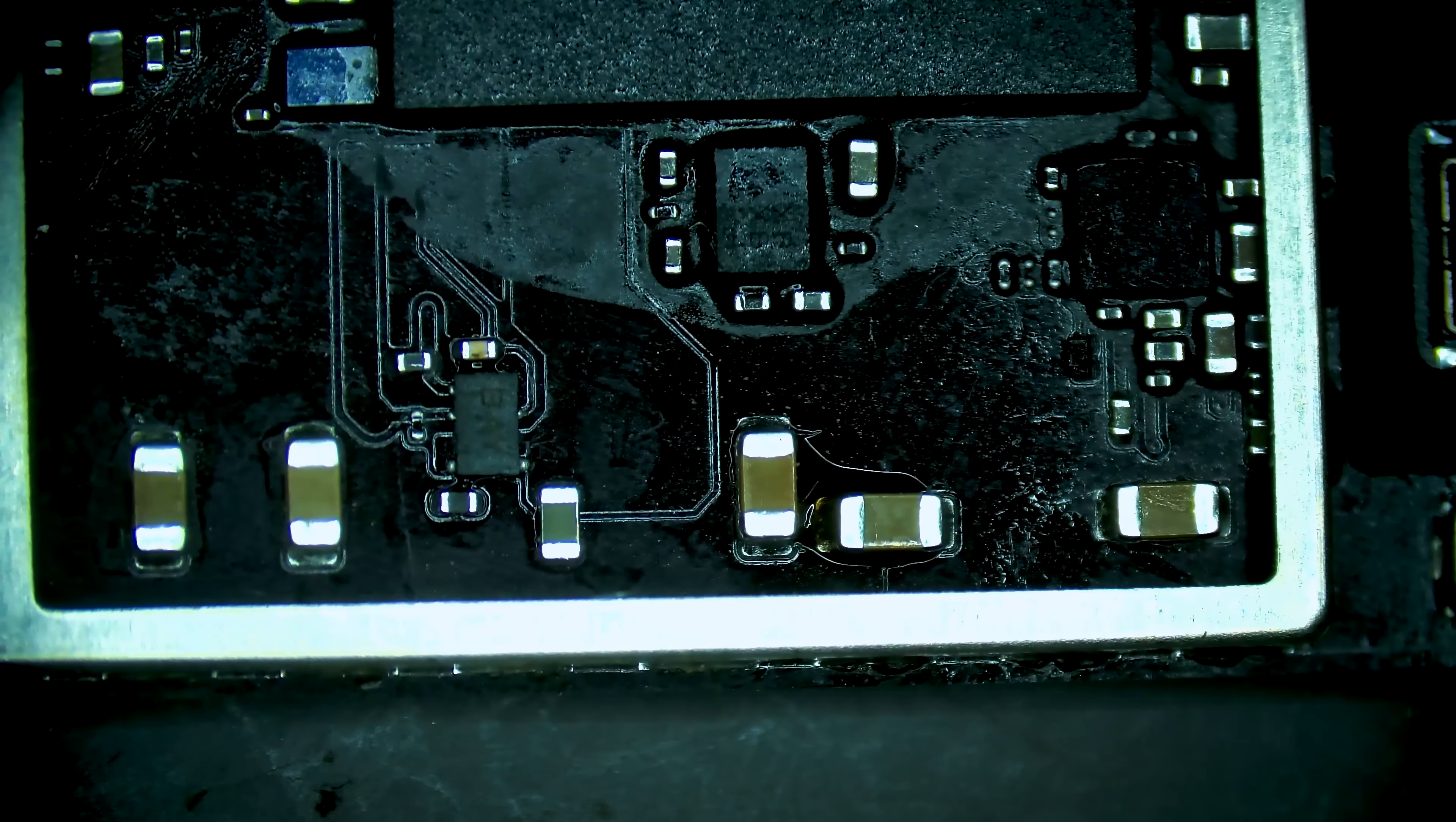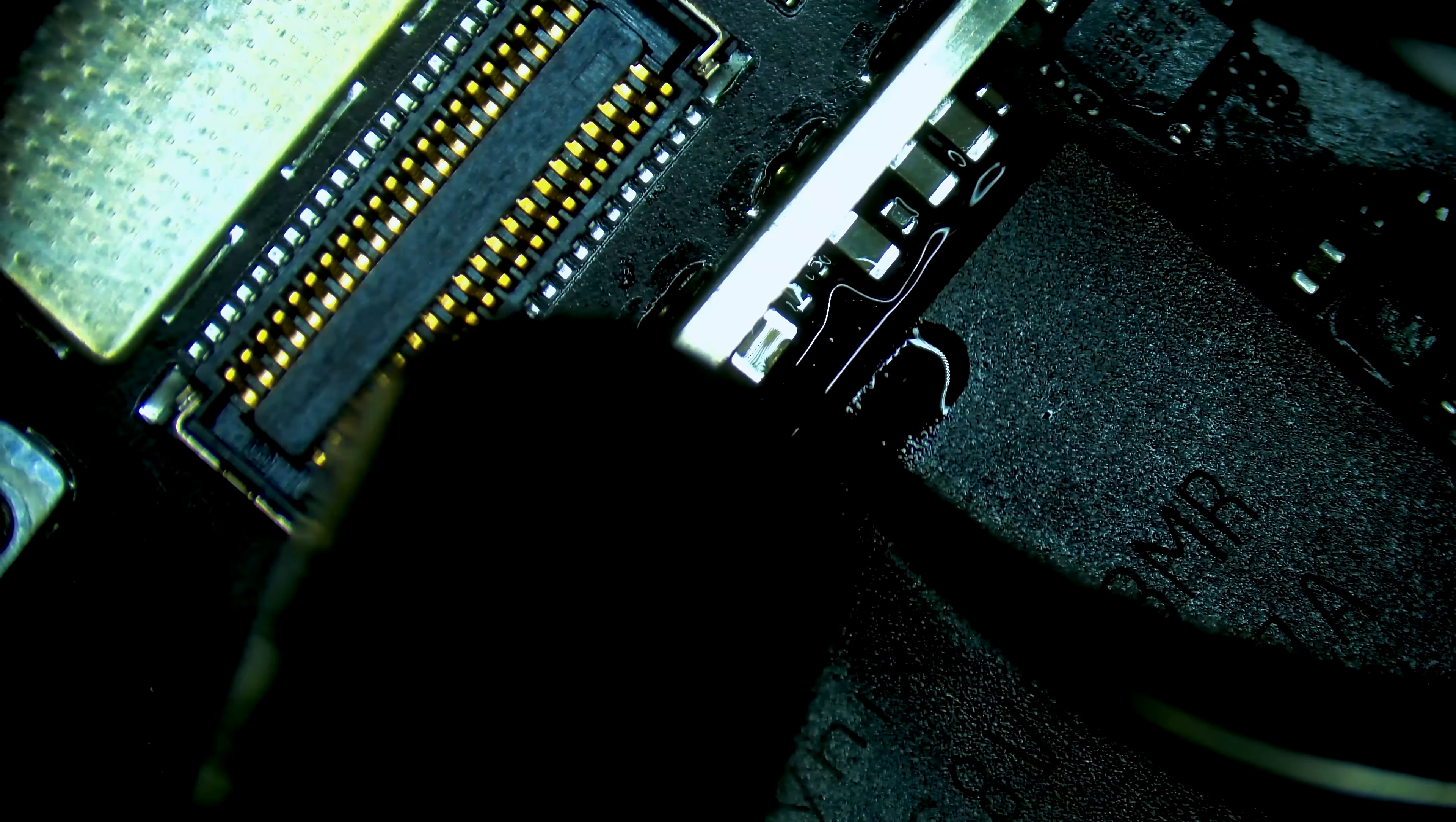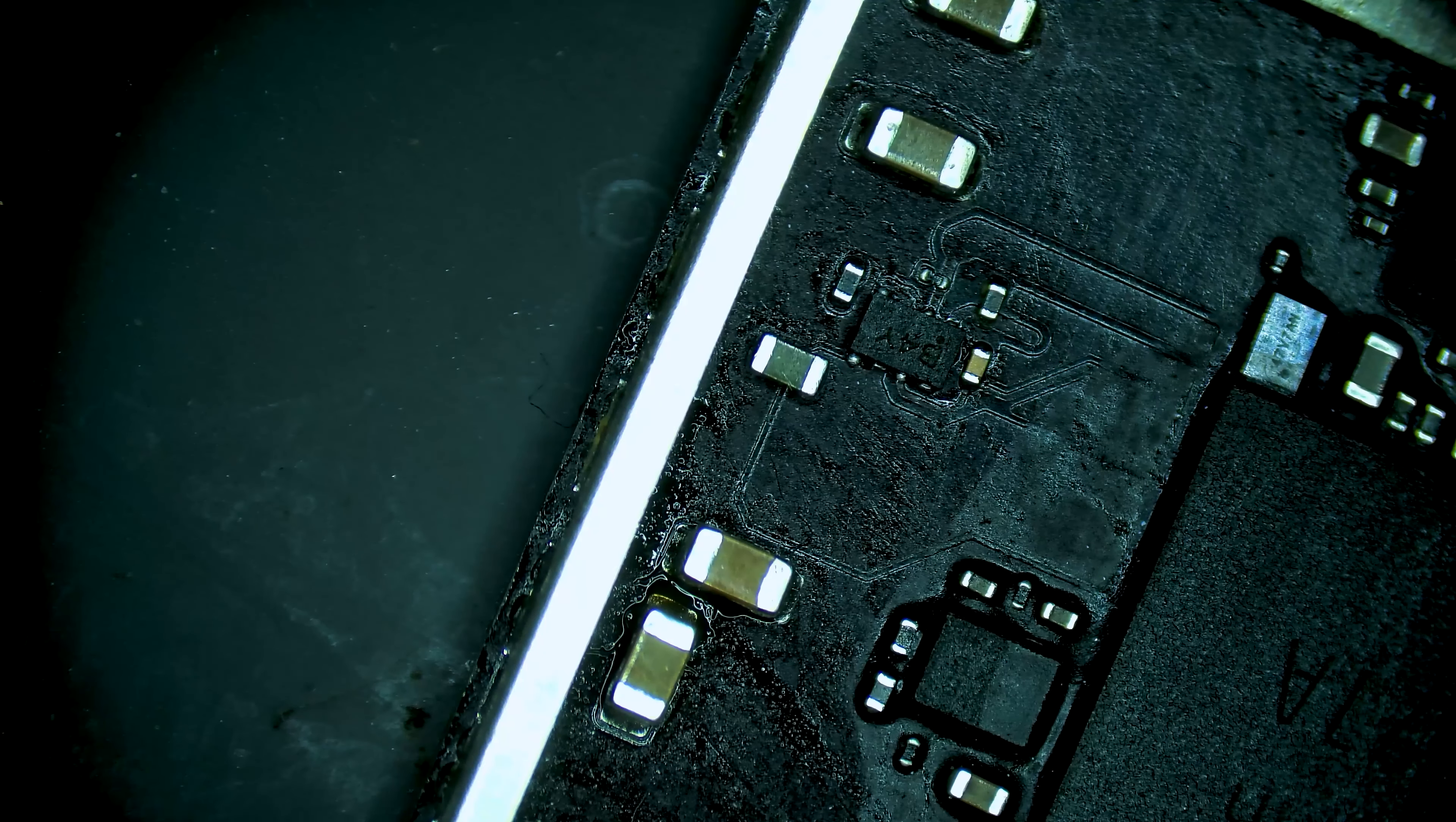Now that component is installed, I'll just throw a new cap back onto this 3V3 line. Alright, now that the cap is replaced, I'll do one final test on the line. Looks good, so let's switch to the overhead camera view.